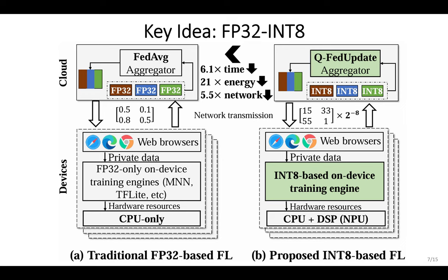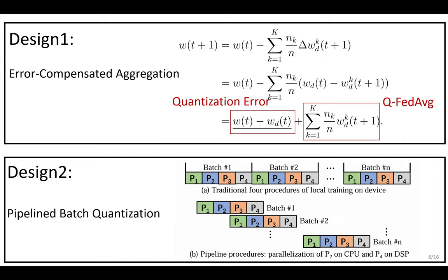This method incorporates two key innovations. First, energy-aware aggregation: this technique reduces the training error on DSPs, mitigating the accuracy loss associated with integer computations. Second, quantization overlapping: by overlapping the quantization process across different batches, we achieve efficiency akin to a pipeline, further enhancing performance.